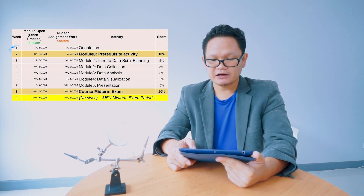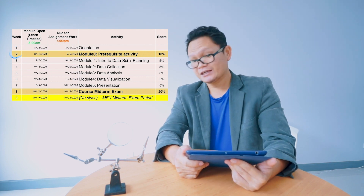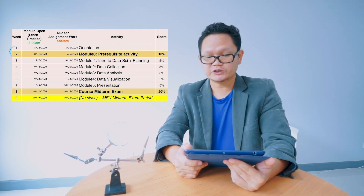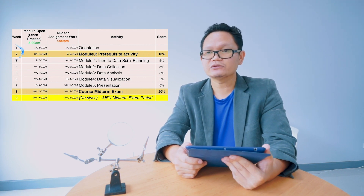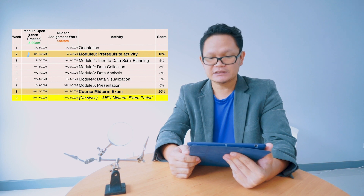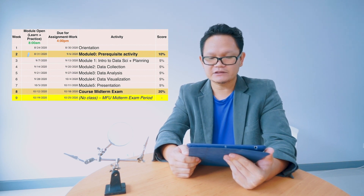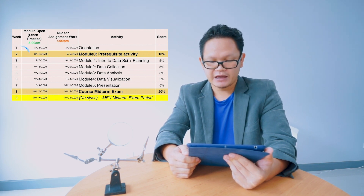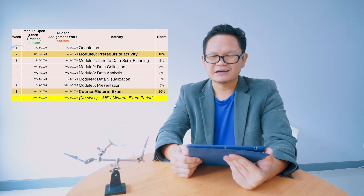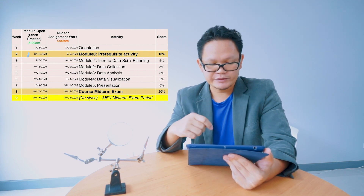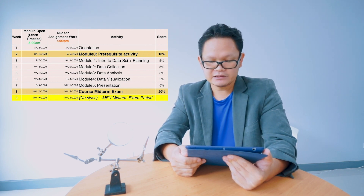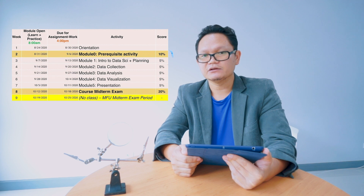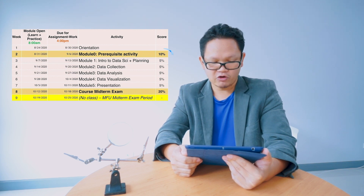In the first and second weeks, you're going to do Module Zero, which is called the prerequisites activity. You are required to do some self-study on basic IT concepts and complete a quiz, which you can repeat as many times as you want. The best score counts for 10% of the course.